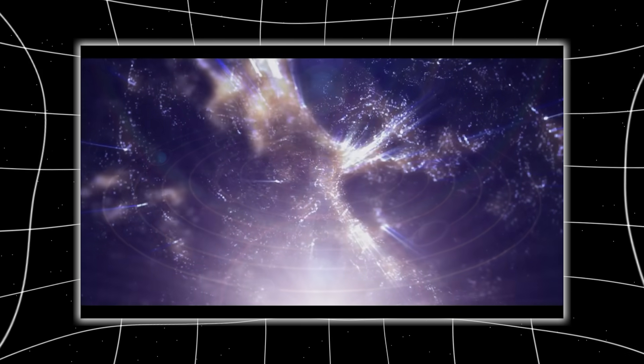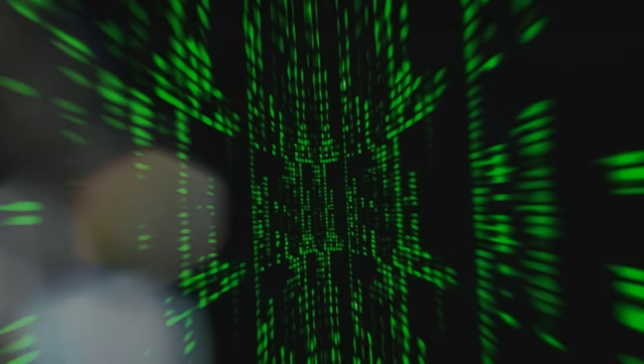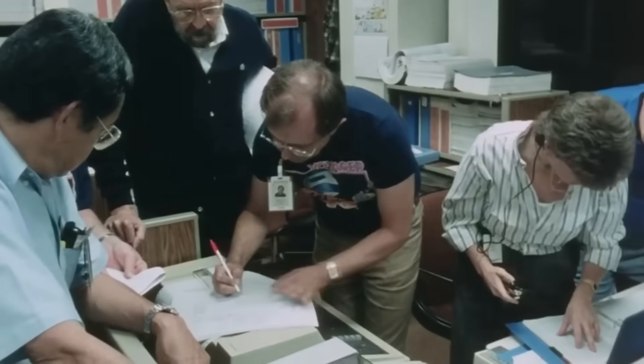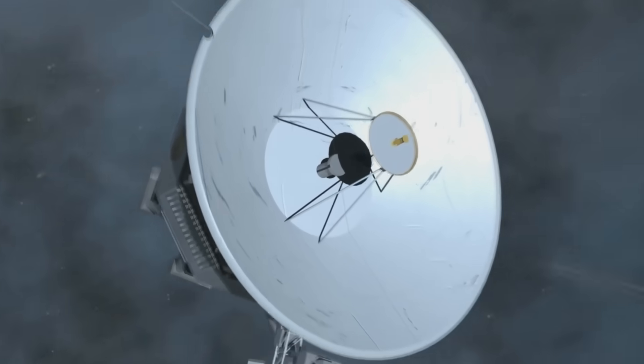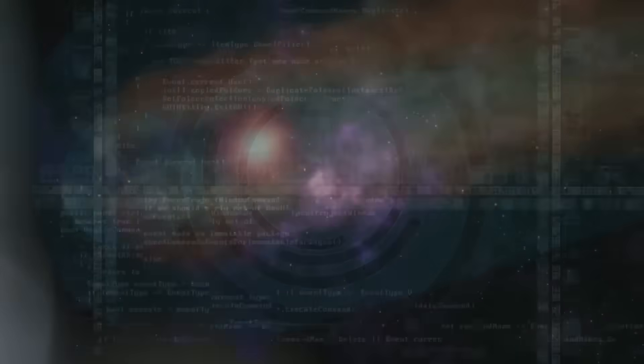As engineers and astrophysicists scratched their heads, a radical idea took form. Maybe the heliopause wasn't a wall. Maybe it was a window. One way. Directional. A filter that allowed signals out but dampened anything coming back in. If true, this would mean our solar system isn't just a bubble. It's shielded, perhaps deliberately. And Voyager 2 just punched a hole through it. Something on the other side might have noticed.